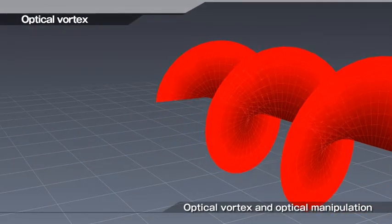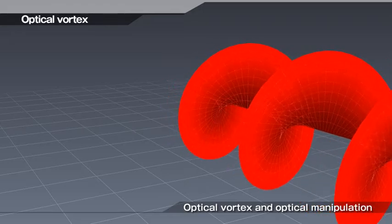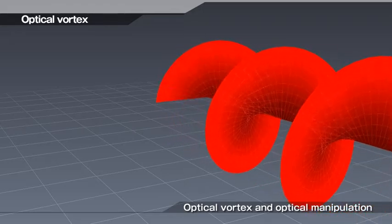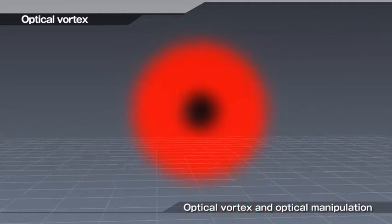Light having a corkscrew type wavefront possesses special properties and spreads while still maintaining a ring shape. This type of light is called an optical vortex.